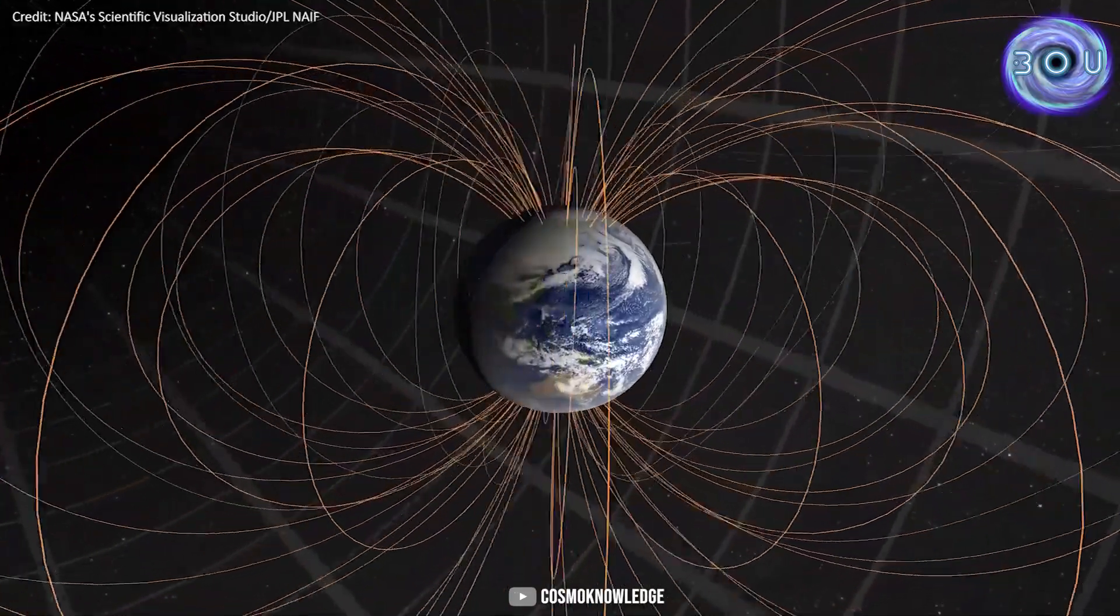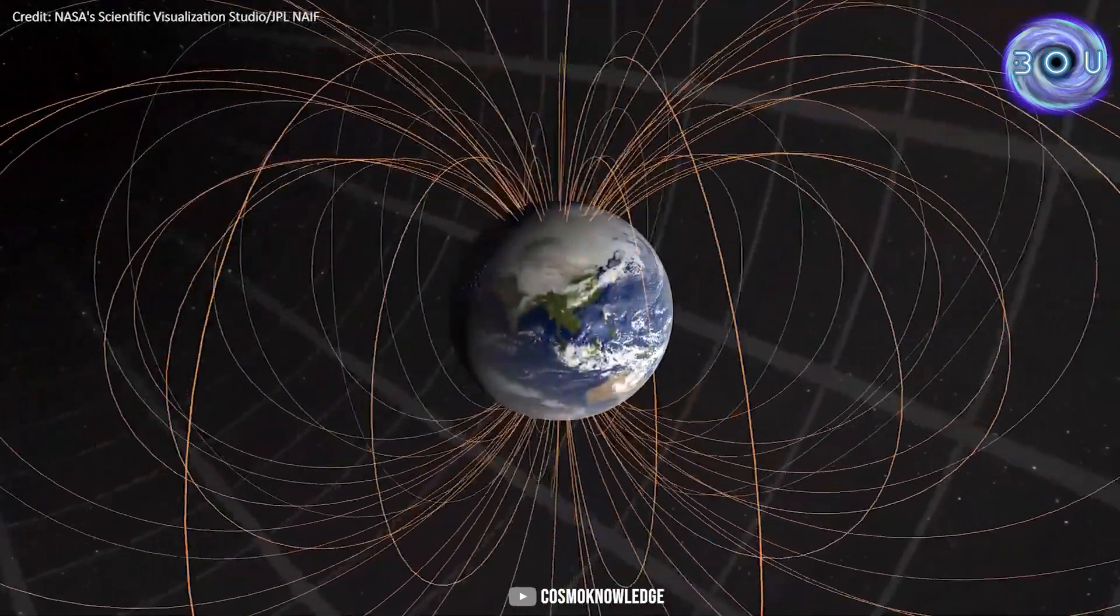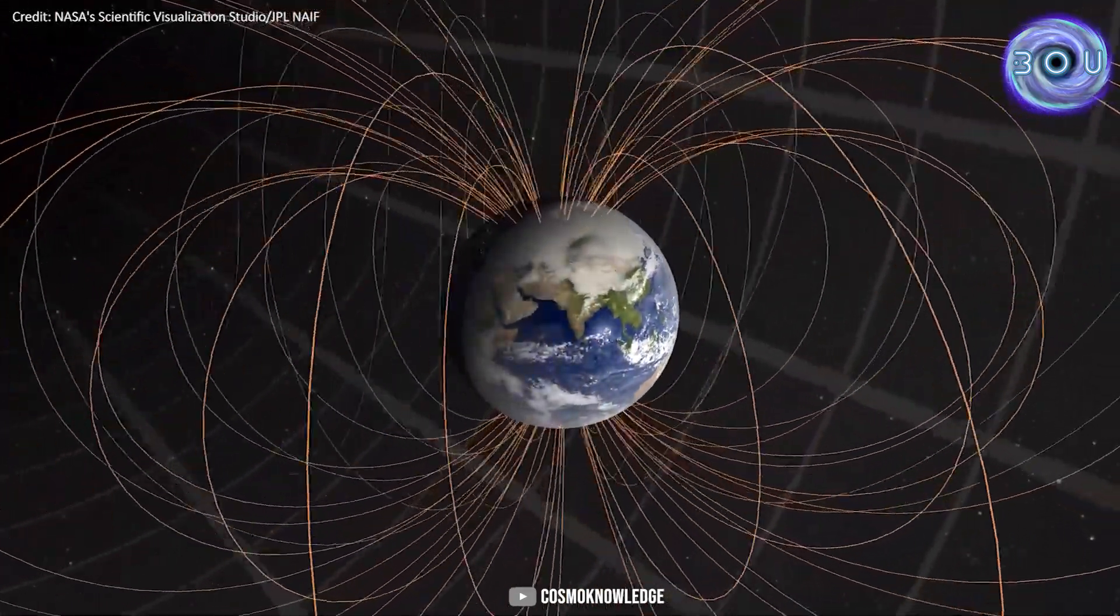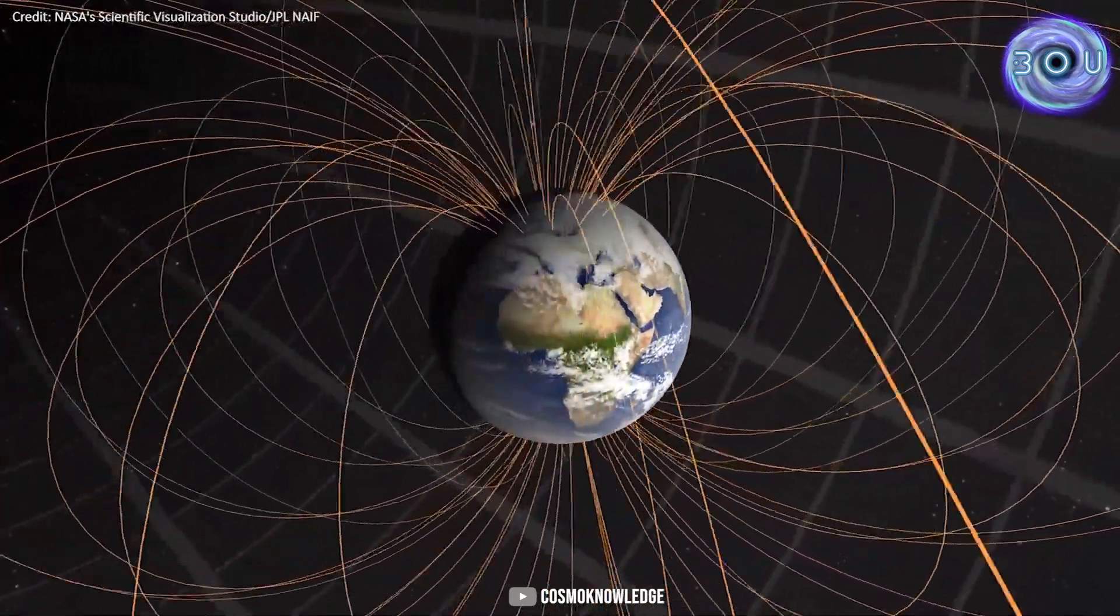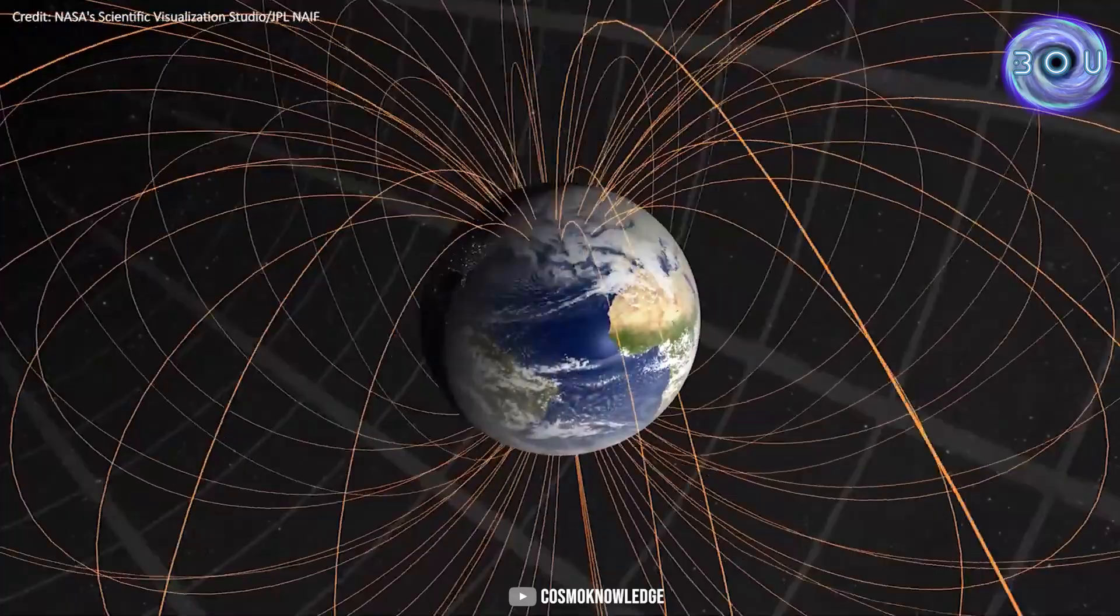It's interesting to note that scientists have announced that the Earth's magnetic field formed approximately 3.5 billion years ago and has continuously protected the Earth since then.